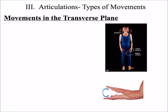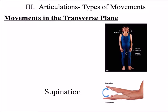In the forearm, medial and lateral rotation have special names: pronation and supination. Pronation is the motion of pouring — turning your palm from face up to face down. In supination, your palm starts face down and you turn it face up.